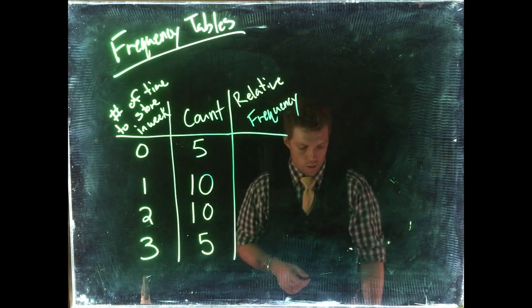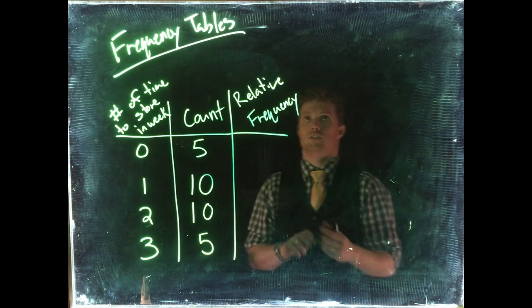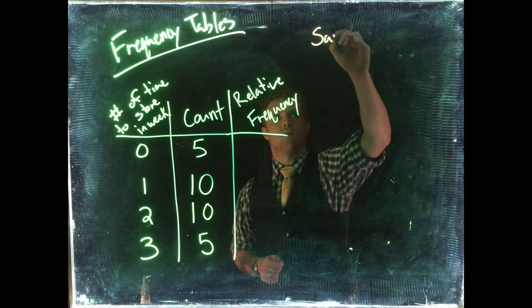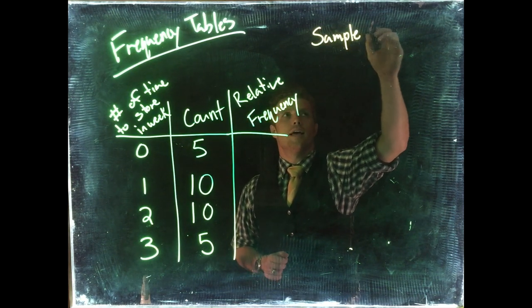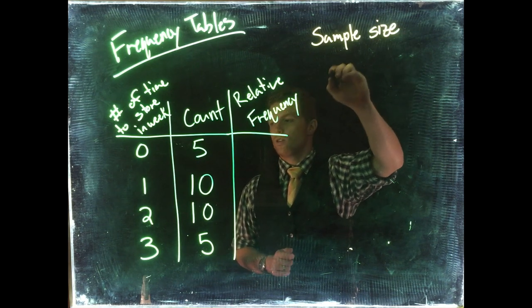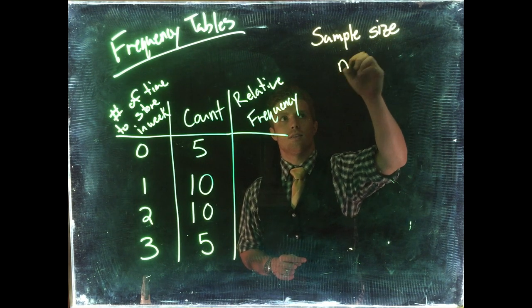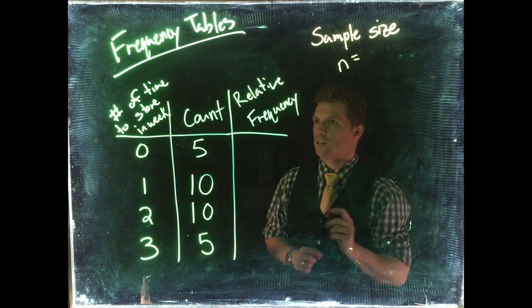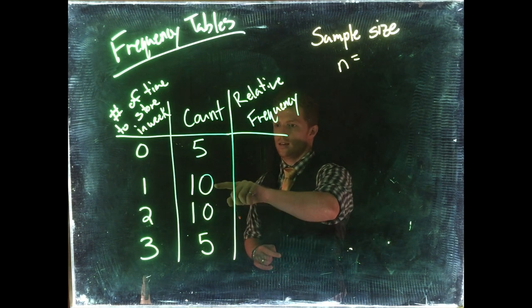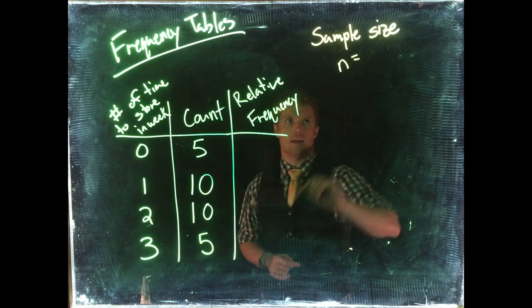In order to know our relative frequency, we need to know what our sample size is. In this case, we're going to introduce a variable, little n. So little n is our sample size, and it equals the sum of all these: we got 10, 20, 25, and 30. So our sample size is equal to 30.